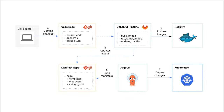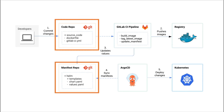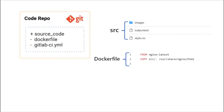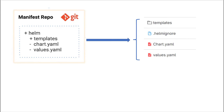Based on the diagram, we need to create two repositories on the GitLab server. The first one is to version-control our application source code, where we will push our application code. The second repo is to version-control our Helm charts for deployment to the Kubernetes cluster.